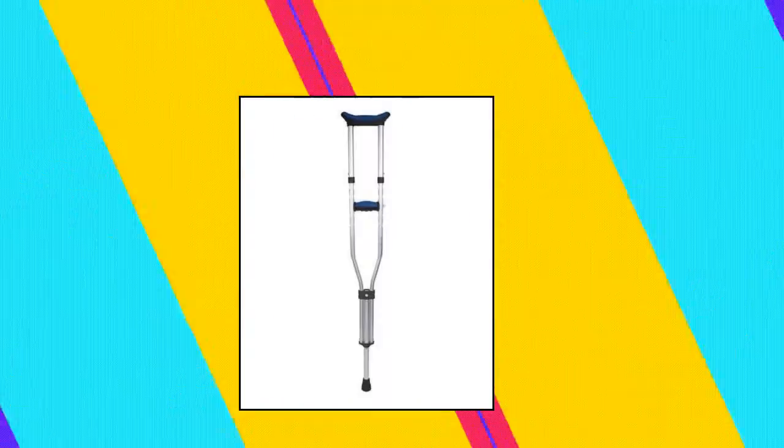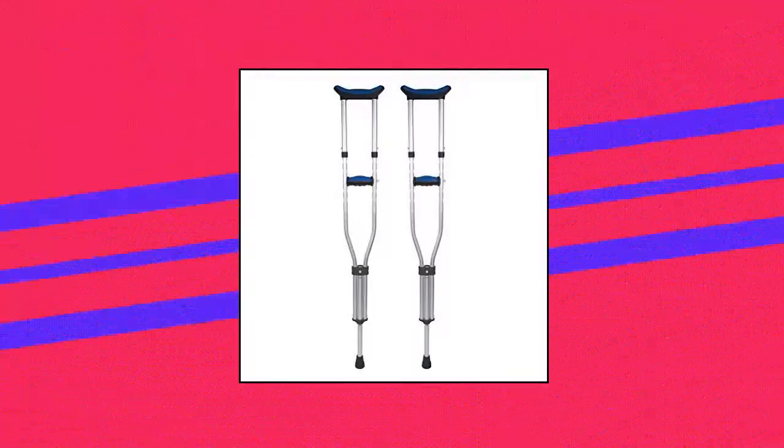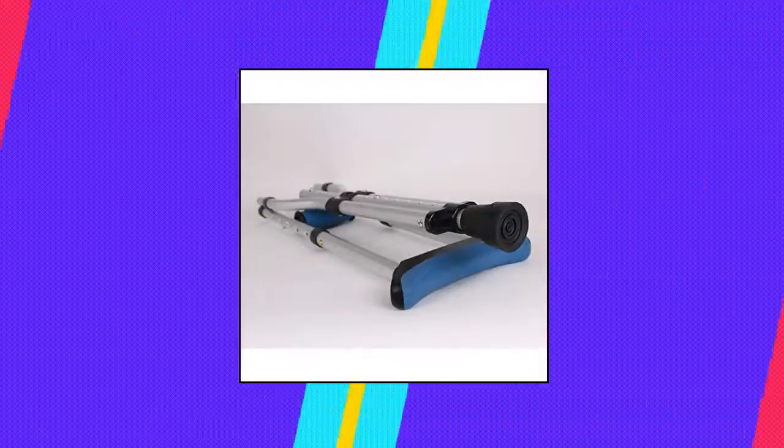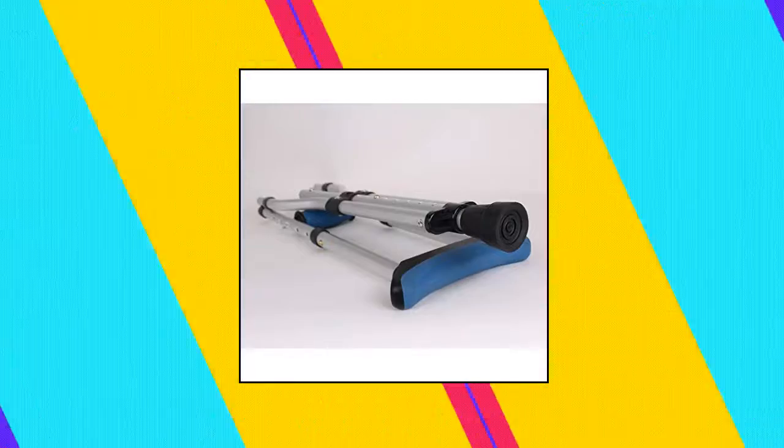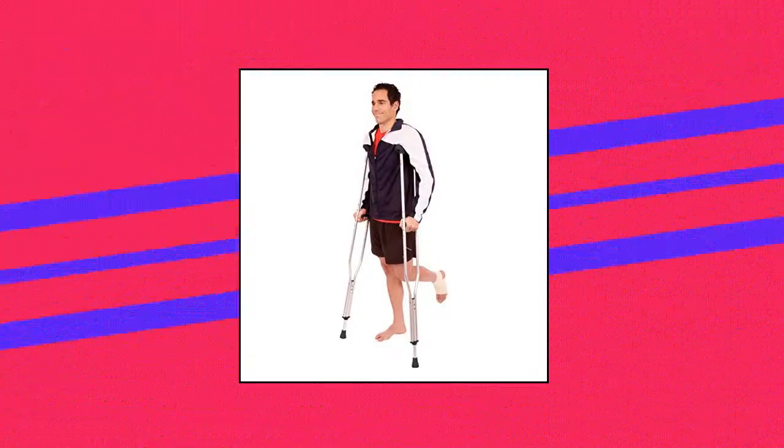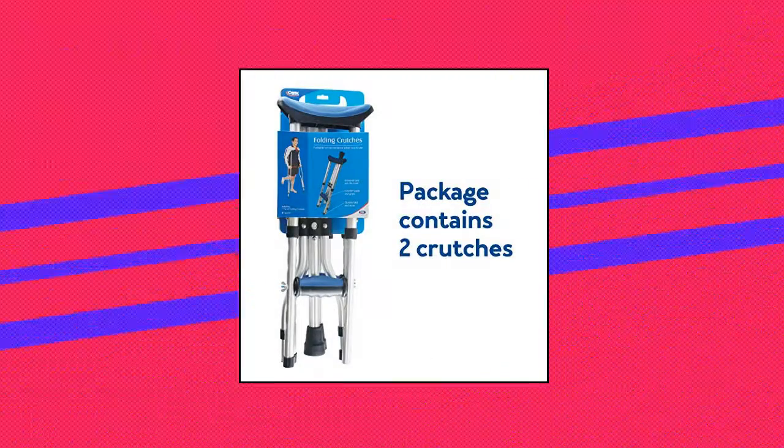Carex folding aluminum underarm crutches. Features a convenient folding system to allow crutches to be easily stored. Crutches for kids, adults, and tall users. Height adjusts easily for those 4'11 to 6'4. Comes with sporty blue crutch pads and grips. Two crutches included.